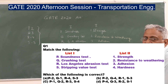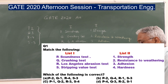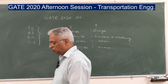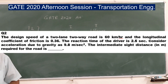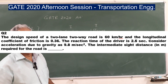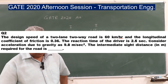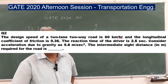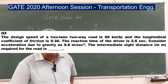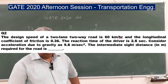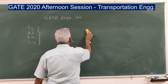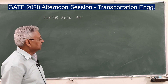The second question: the design speed for a two-lane two-way road is 60 km/h, the longitudinal coefficient of friction is 0.36, and the reaction time of the driver is 2.5 seconds. Consider acceleration due to gravity as 9.8. The intermediate sight distance in meters required for the road is to be found. Intermediate sight distance is twice the stopping sight distance.